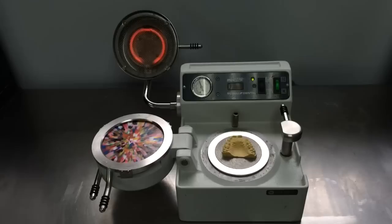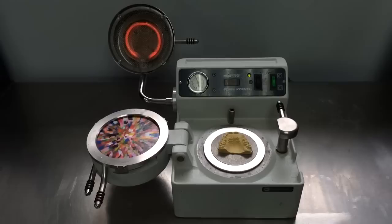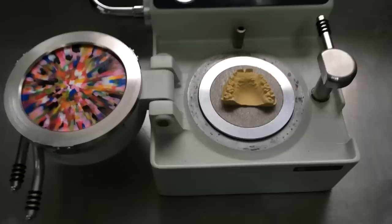All right, so here is how the mouth guard itself is actually made. This is the little machine, it's called a mini star. This is the machine that actually makes the mouth guard. So we've got the model here. Over on this side here, here's the actual mouth guard material.